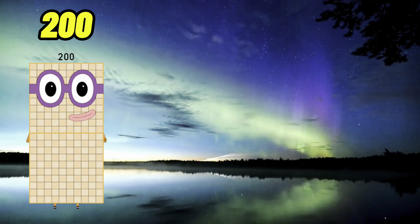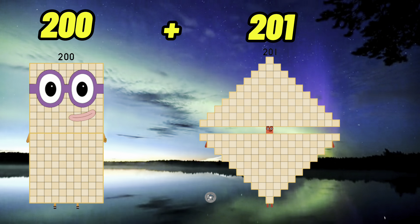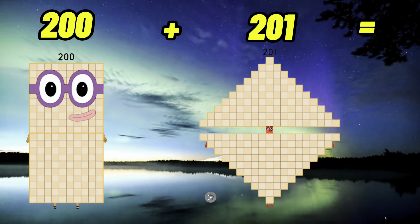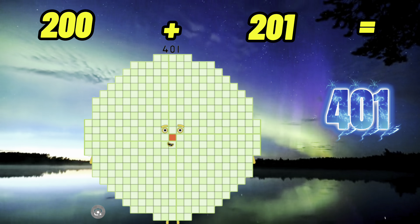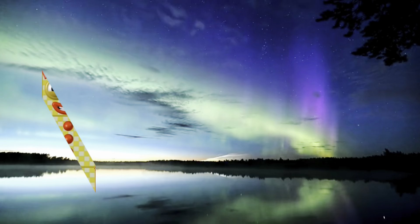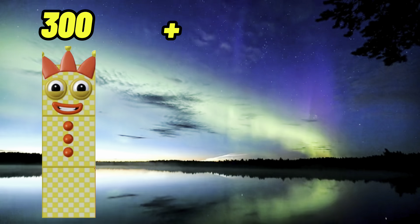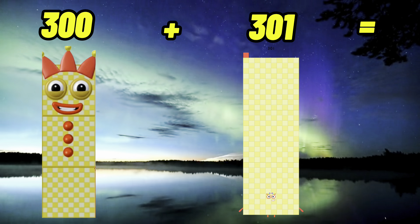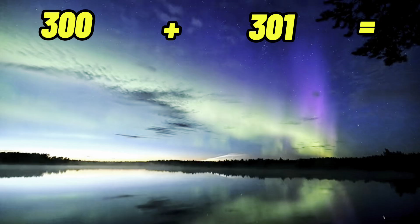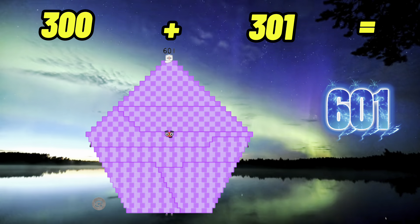200 plus 201 equals 401. 300 plus 301 equals 601.